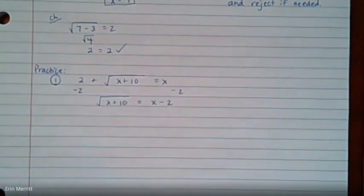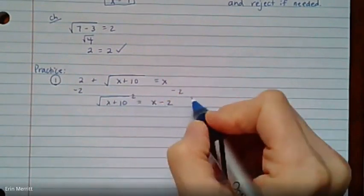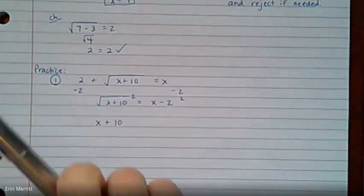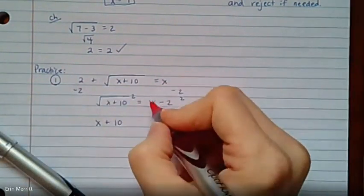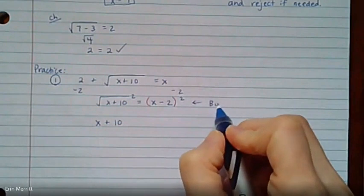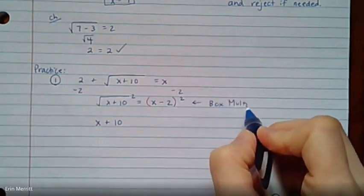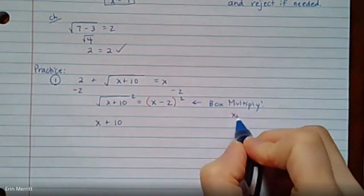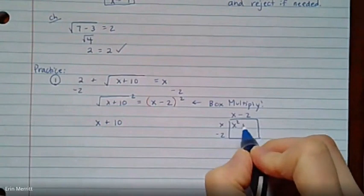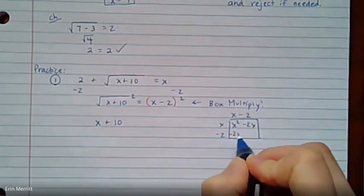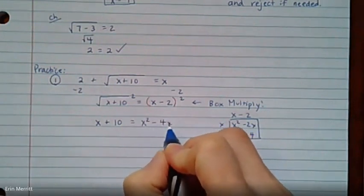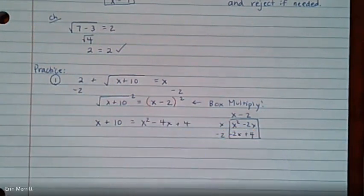Step 2, square both sides. So to square the left side, square the right side. On the left, that just becomes x plus 10. On the right, this entire entity needs to be squared. So we're going to do a little foil or box multiplication, whichever you prefer. So we should have x squared minus 2x minus 2x and plus 4 for a total of minus 4x plus 4 when we bring it on over.